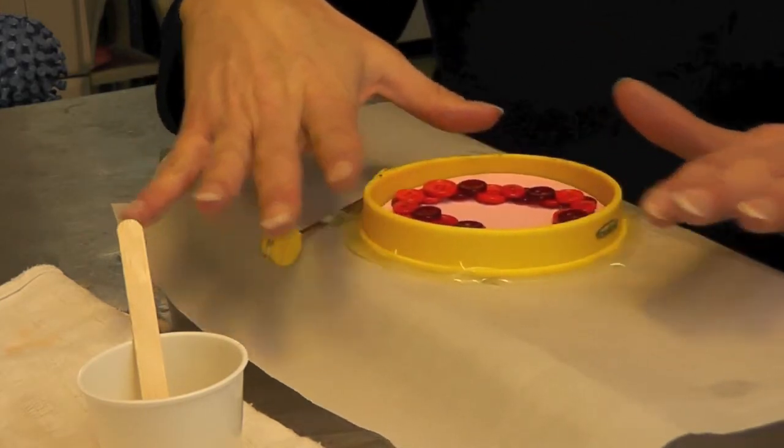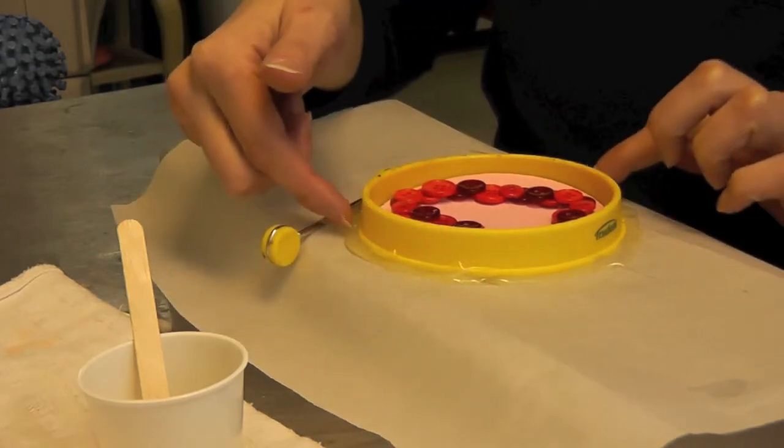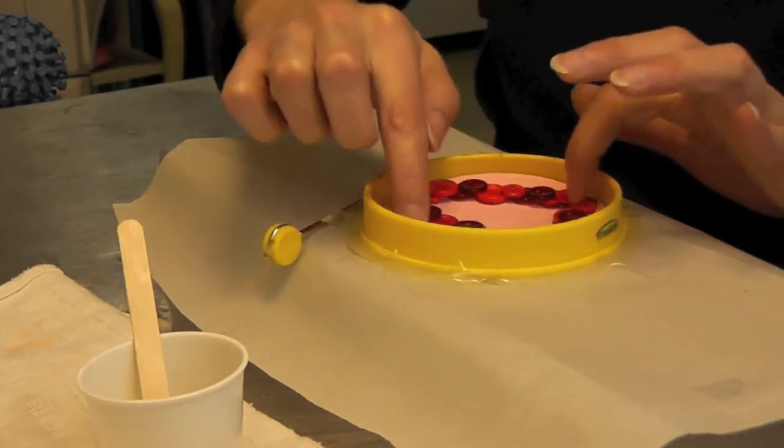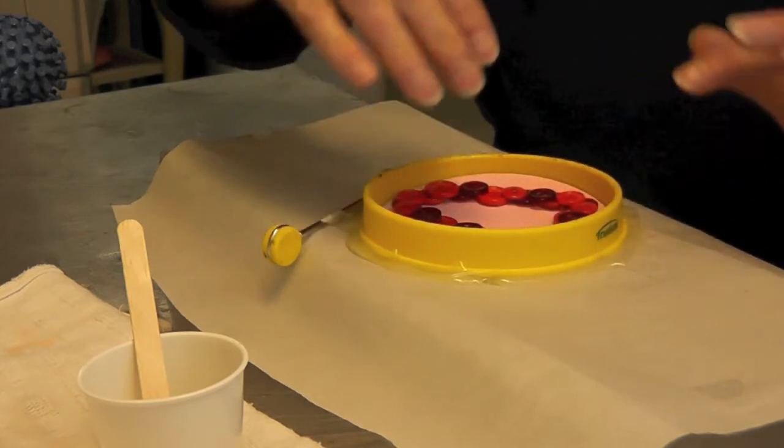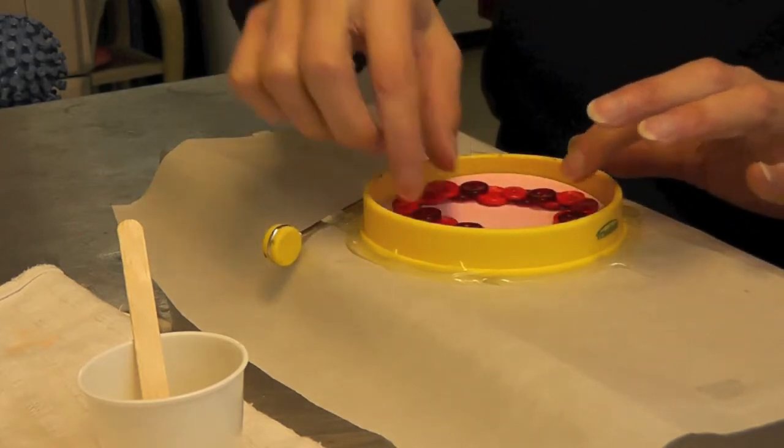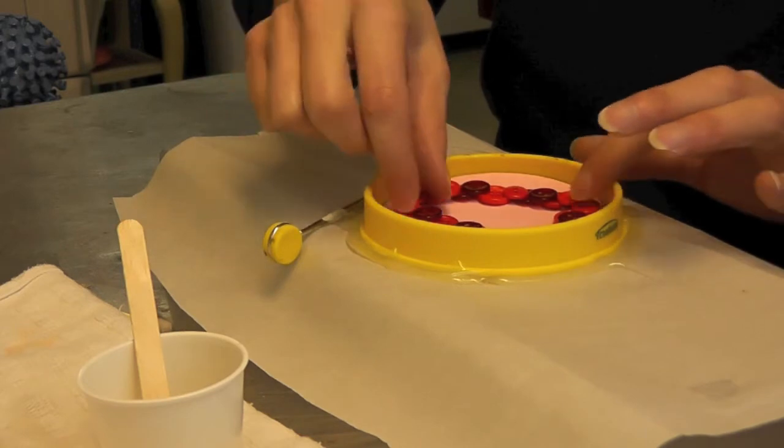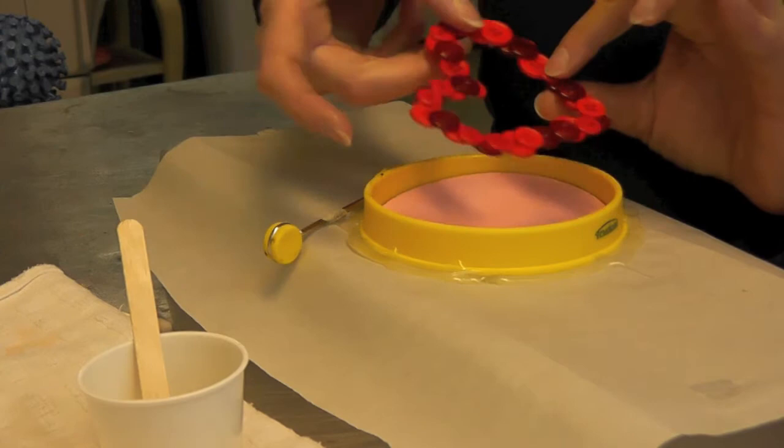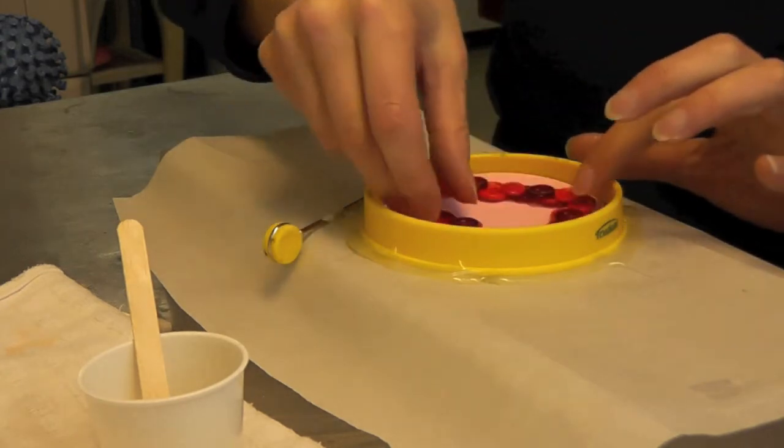The reason I put the hot glue around the egg shaper is to create a dam in case any of the resin gets through between the cork and the silicone. All I've done is I've taken the button heart and laid it in there.